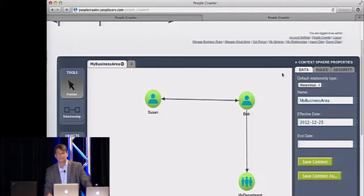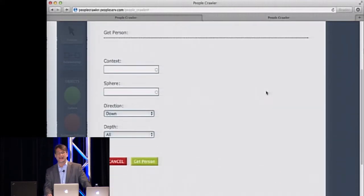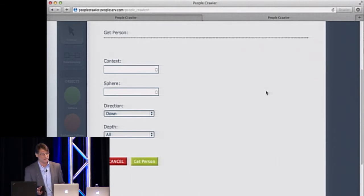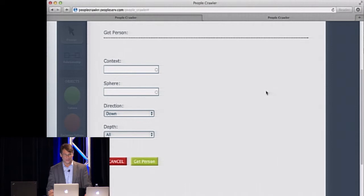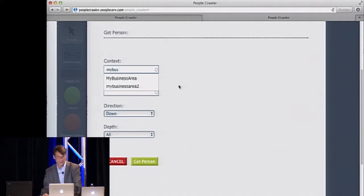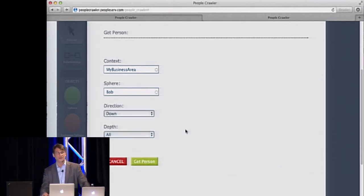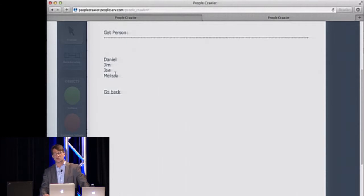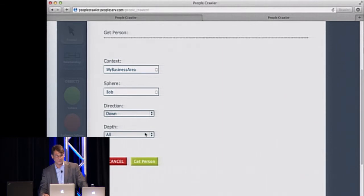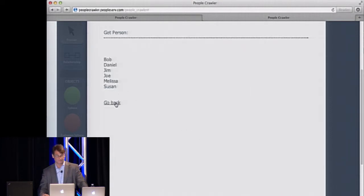Well, let's see how this information is used. It's used with a function called get person. And get person is actually a web service. It's meant to be called as a web service. I just have this page just to help with demonstrations. And what it asks for is a point in space, a context within a sphere. So I'll pick my business area and I'll look at Bob. And a direction you want to traverse. The directions can be down, looking down a structure, up, going up a structure, or all in the case of peer-to-peer structures. And depth is the number of levels you want to traverse. You can either traverse all levels or specify another value. And if I run the get person, it will return Daniel, Jim, Joe, Melissa, who are the people in my department. If I change the direction to all, then it should bring in Susan also because there's that peer relationship. And there she is.